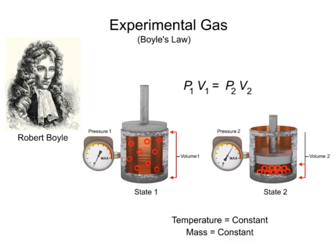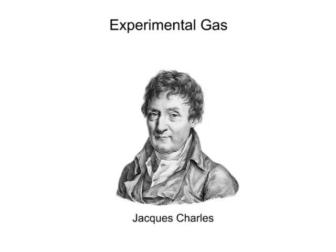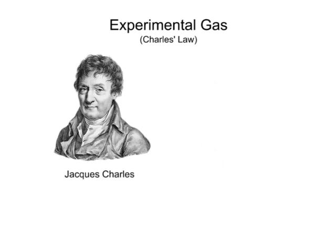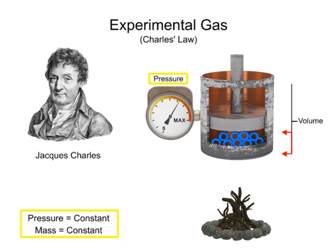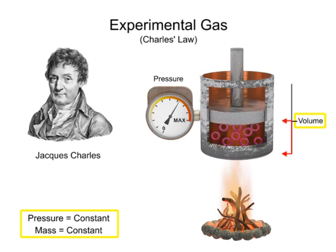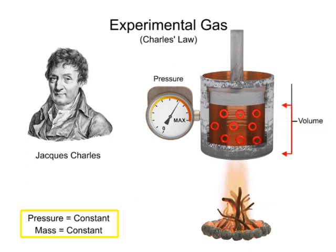In the late 1700s, Jacques Charles, a French scientist and mathematician, discovered an important rule regarding gases under pressure. Charles' Law, also known as the Law of Volumes, is an experimental gas law which describes how gases tend to expand when heated. It states that if the pressure of a gas is constant and its temperature is raised, the volume will also be raised by the same ratio. Additionally, the inverse is true: if the pressure of a gas is constant and the temperature is lowered, the volume will also lower.